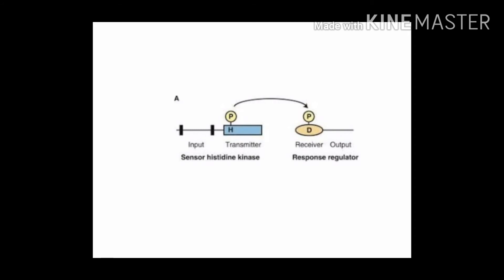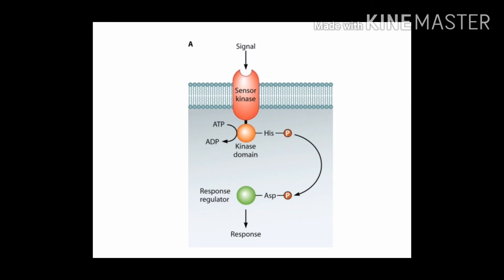The signal is passed from the transmitter domain to the receiver domain via protein phosphorylation. The transmitter domain has the ability to phosphorylate itself using ATP on a specific histidine residue near the amino terminus. Thus, sensor proteins containing transmitter domains are called autophosphorylating histidine kinases. These proteins normally function as dimers in which the catalytic site of one subunit phosphorylates the acceptor site on the other subunit when an environmental signal is received. As soon as the transmitter domain becomes autophosphorylated on a histidine residue, the phosphate group is then transferred to a specific aspartate residue near the middle of the receiver domain of the response regulator protein.